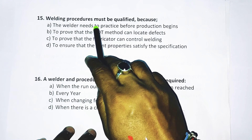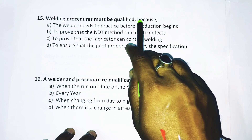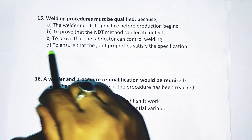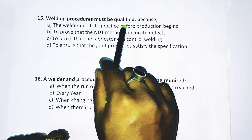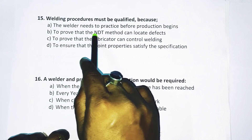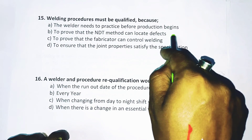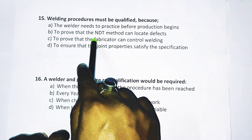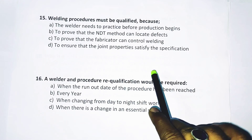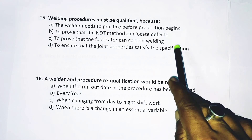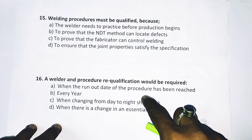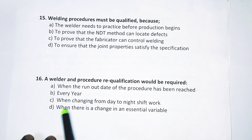Question number 15: Welding procedures must be qualified because — to ensure that the joint properties satisfy the specification. The welder needing to practice before production begins is not the right answer. Proving the NDT method can locate defects is also not right. Proving that the fabricator can control welding is also not correct. The correct answer is D — to ensure that the joint properties satisfy the specification.